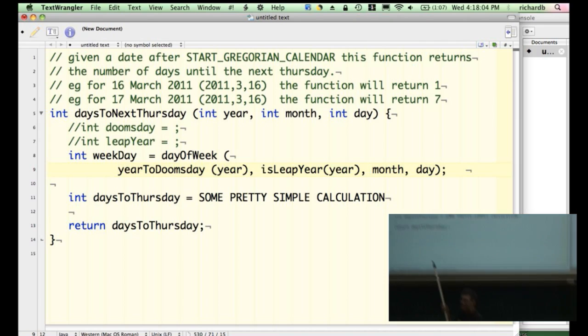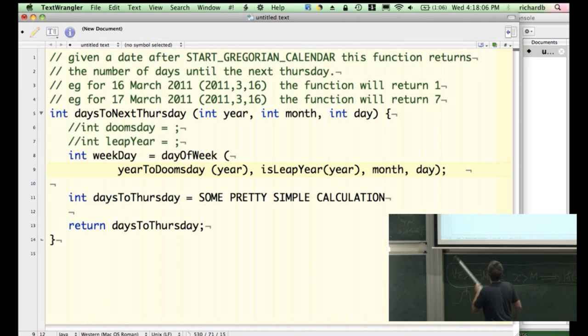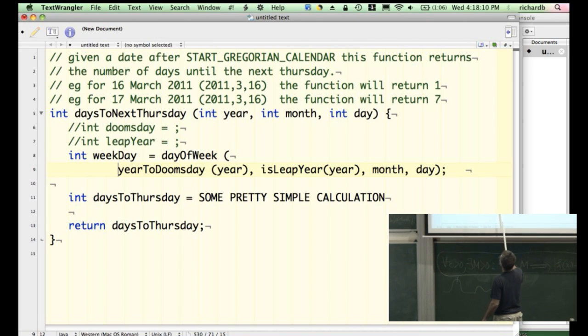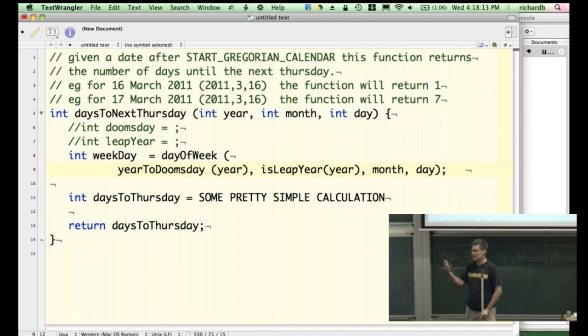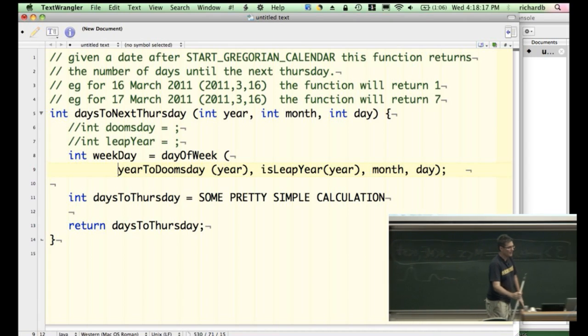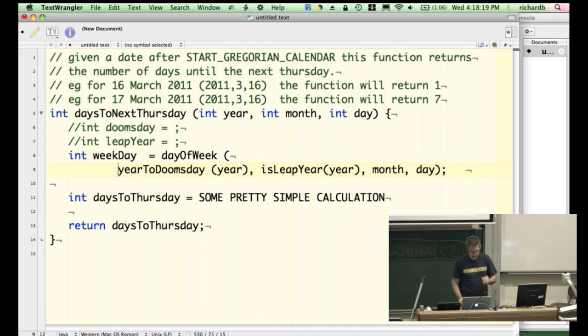Even though yearToDoomsday of the year obviously will be a doomsday. But does that make sense? It is now slightly more confusing, I think, more cluttered. So I wouldn't suggest doing that. But the other one I thought was fine. Any more questions?